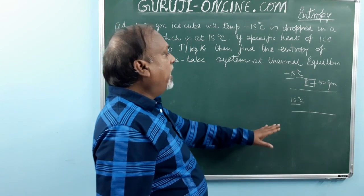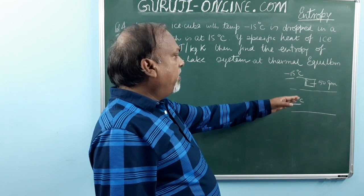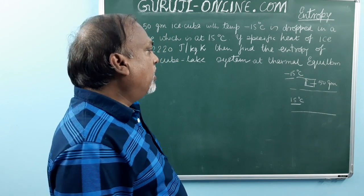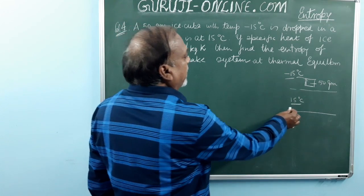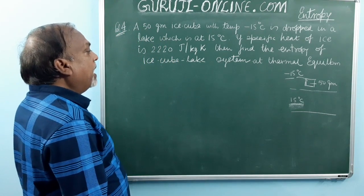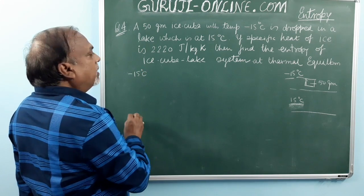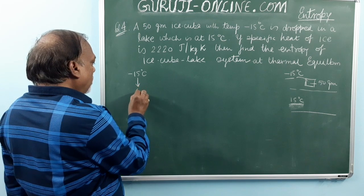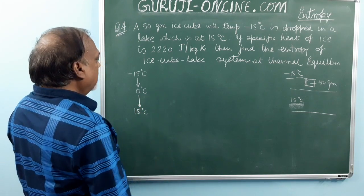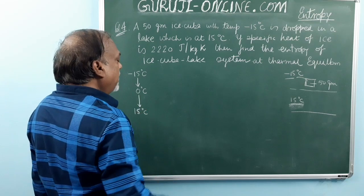The ice starts at minus 15°C. It will first go to 0°C, and then go to 15°C. When it goes from minus 15 to 0 degrees centigrade, the entropy change S1 equals the integral of m Ci dT upon T, which equals m Ci ln(Tf/Ti).